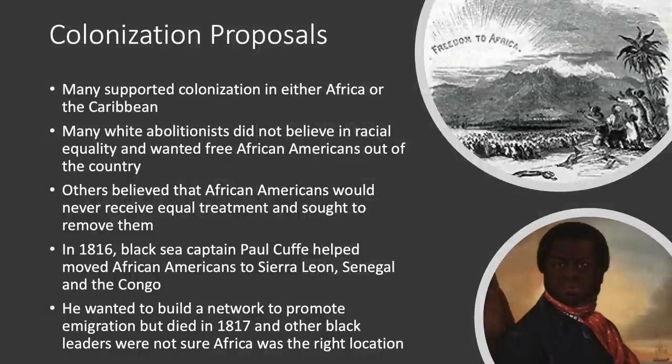For many early abolitionists, the solution to slavery centered on colonization — resettling African Americans to either Africa or the Caribbean. Many white abolitionists did not believe in racial equality and wanted to move free African Americans out of the country. One example is Paul Cuffey, an African American businessman and sailor who, after becoming a Quaker, assisted in resettling free blacks to the British colony of Sierra Leone. In December 1815, he and 38 black settlers sailed for Sierra Leone, but he died in 1817, and other black leaders were not sure Africa was the right choice.